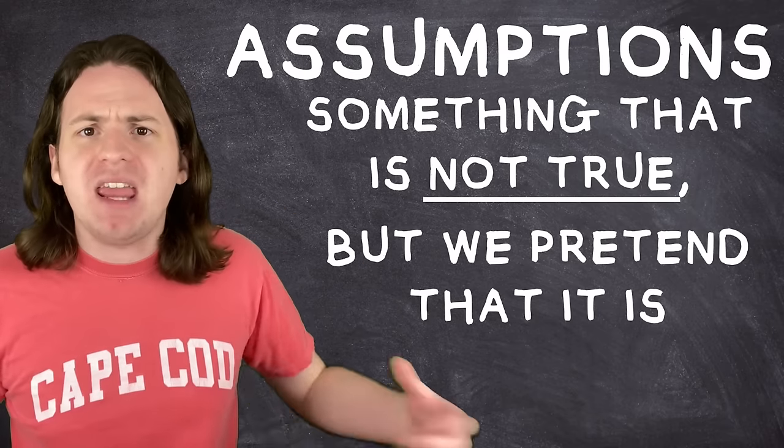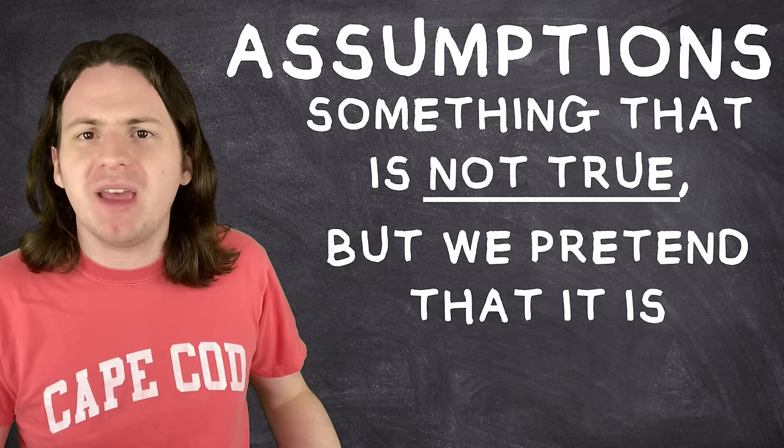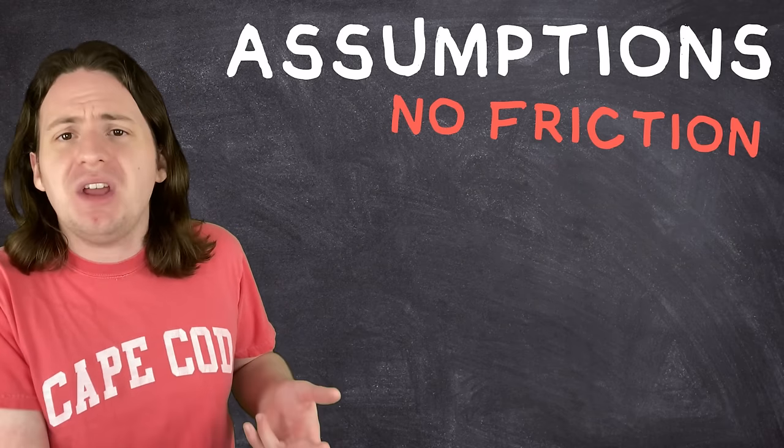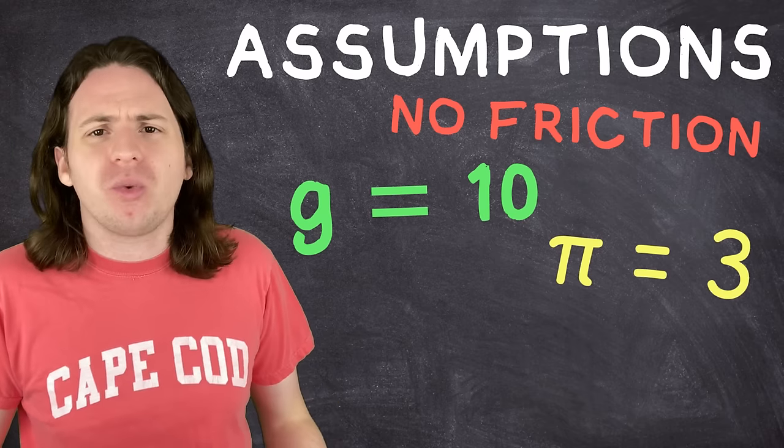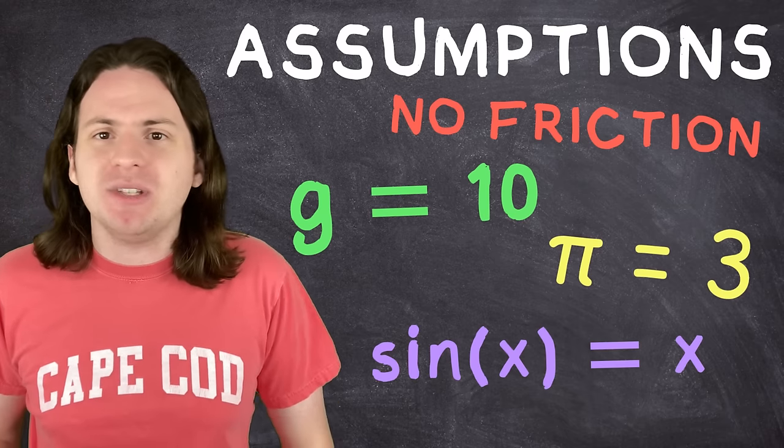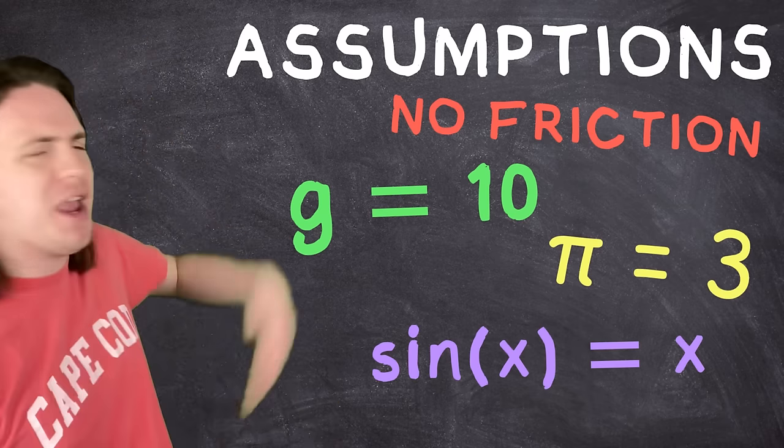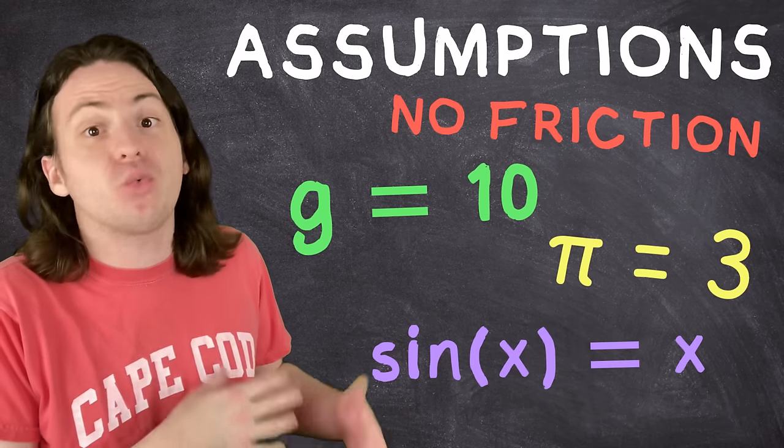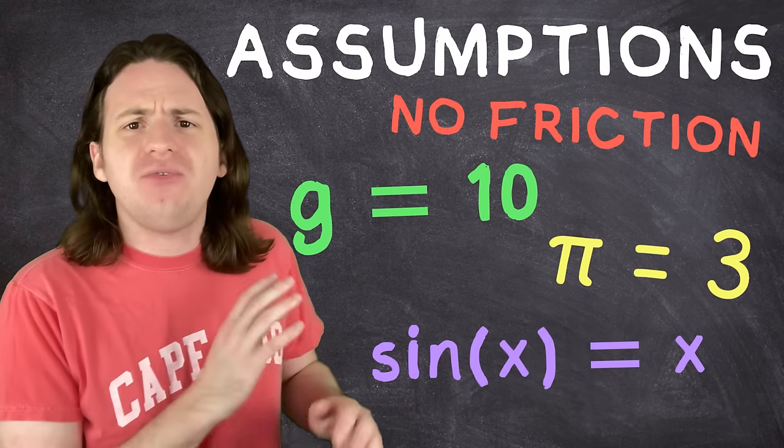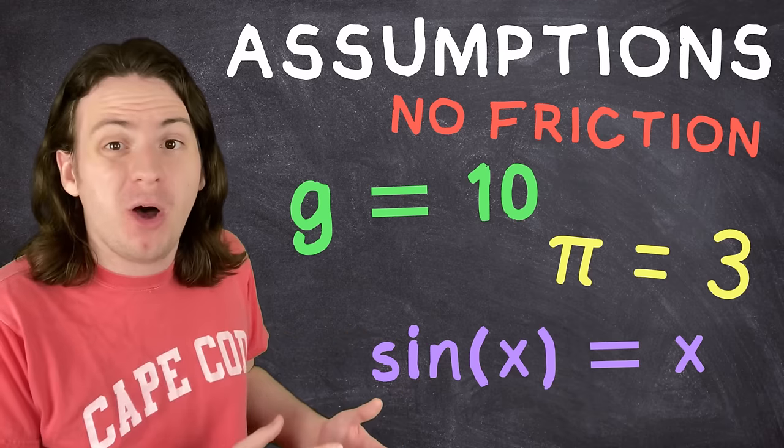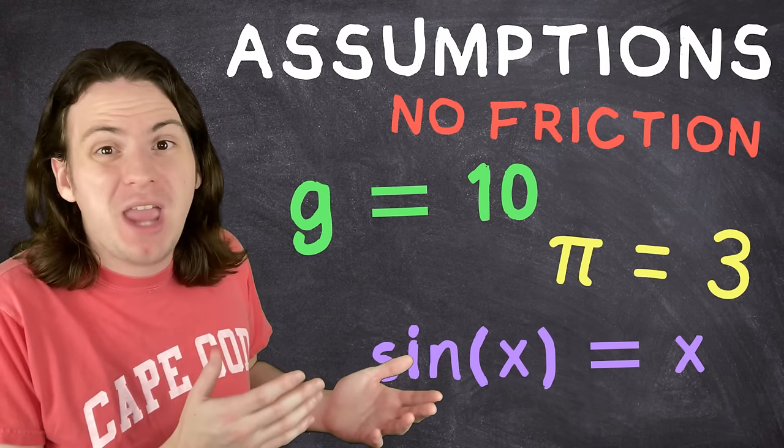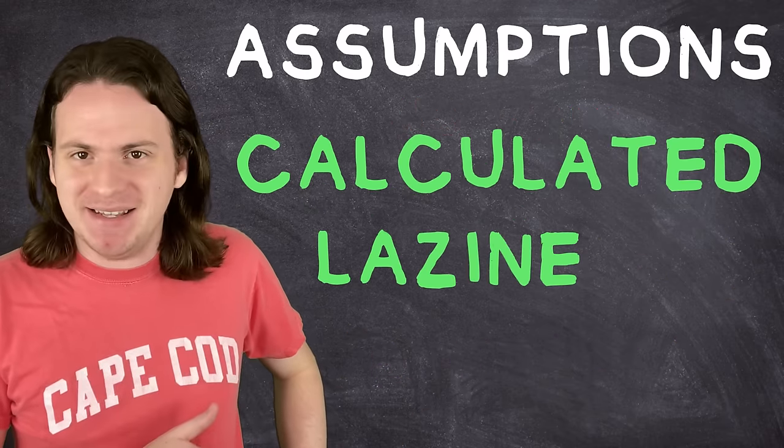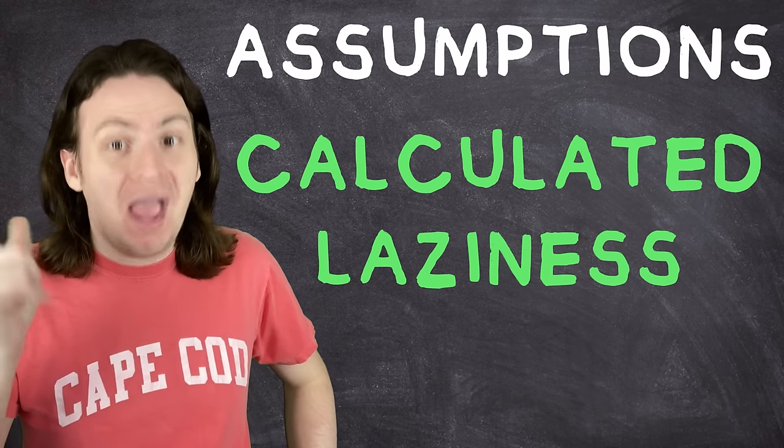So if anyone's taken a physics class, you've probably seen a problem where they say like, assume that there's no friction, or assume that g is equal to 10, and pi is equal to 3, and sine of x is equal to x. We're not doing any of that trig bullshit. We know that these things aren't true, and we're technically getting the wrong answer, but the effects of these things on the final result are so small, that we just don't care. I like to think of it as calculated laziness. And you can put that on my frickin' headstone.